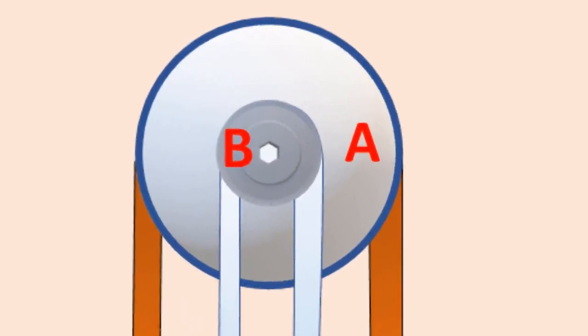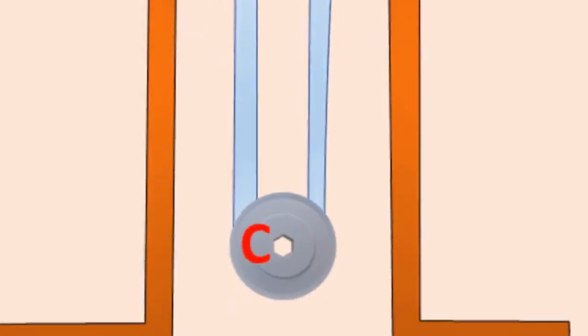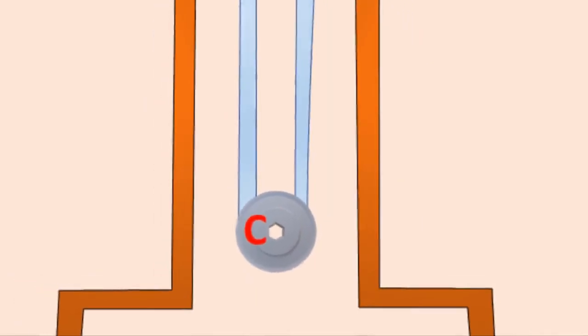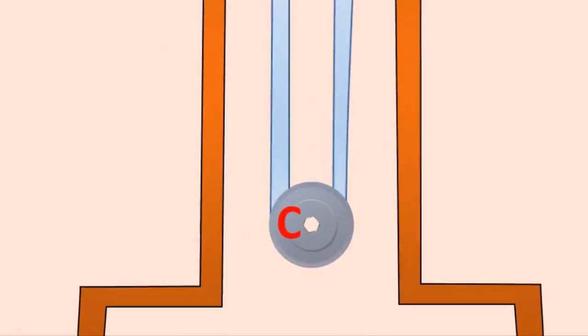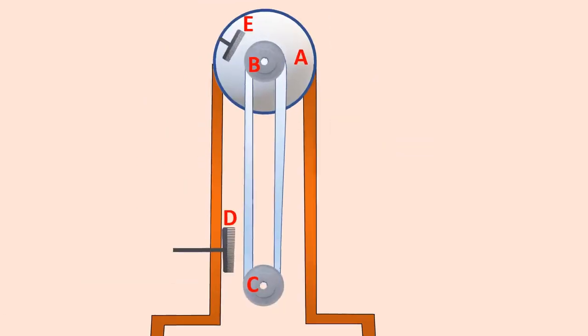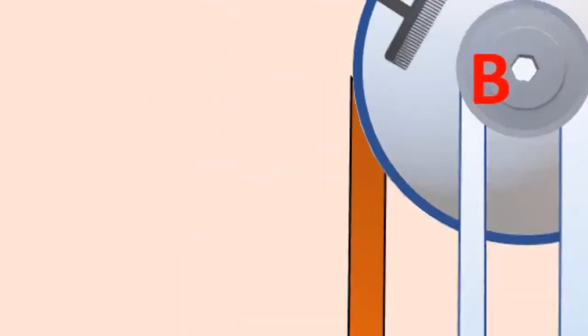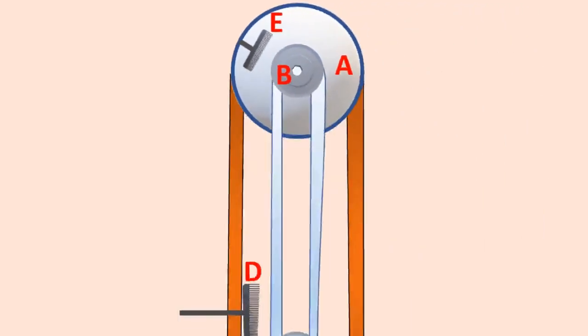A belt made up of insulating materials like silk or rubber runs over both pulleys. The pulley C is driven continuously by the electric motor. Two comb-shaped metallic conductors D and E are fixed near the pulleys.